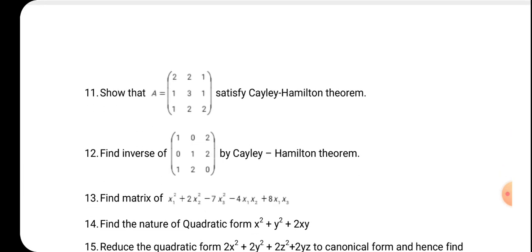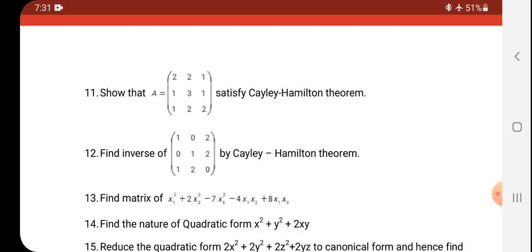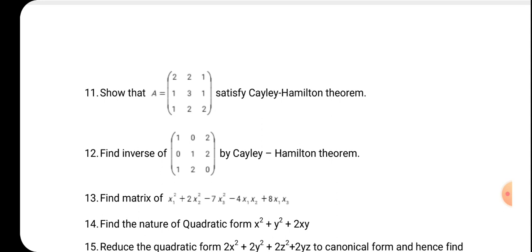Eleventh: show that the given matrix satisfies the Cayley-Hamilton theorem. Naturally, every square matrix satisfies its own characteristic equation — that is the statement given by Cayley-Hamilton — so you just verify it. Twelfth: find the inverse of a matrix using the Cayley-Hamilton theorem. After getting the characteristic equation, replace A and directly calculate the inverse — you need not verify it separately.